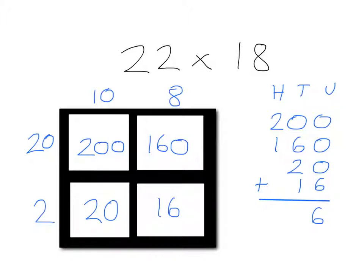Then, I am adding just the 10s column to get 2, add 6, add 1, which gives me 9. And then, I am adding just the 100s column by here to get 3. So my final answer is 22 times 18 is 396.